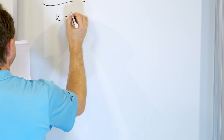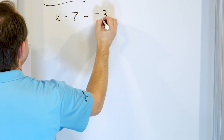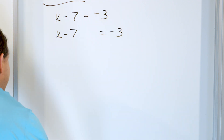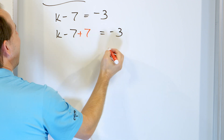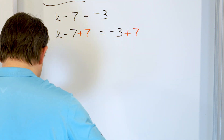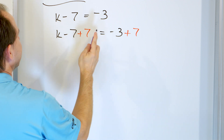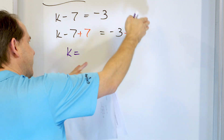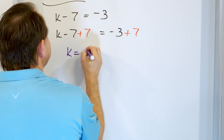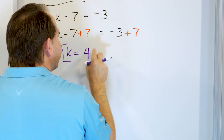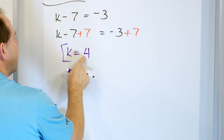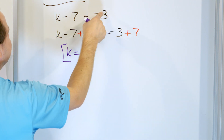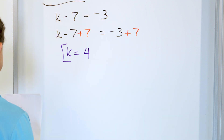What about k minus 7 equals negative 3? Rewrite it: k minus 7 equals negative 3. We've subtracted 7, so in order to get k by itself, we will add 7 to both sides. On the left-hand side, negative 7 plus 7 is 0, and all you're left with is k. What's negative 3 plus 7? Flip it around: 7 minus 3 is 4. The sign goes with the larger absolute value, which is positive. Check your work: 4 minus 7 is indeed negative 3.